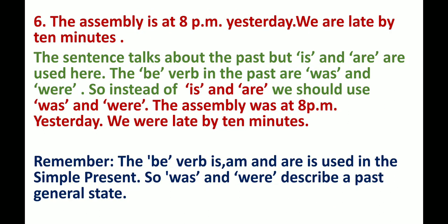Number 6: The assembly is at 8pm yesterday. We are late by 10 minutes. The sentence talks about the past, but 'is' and 'are' are used here. The b-verbs in the past are 'was' and 'were'. So instead of 'is' and 'are', we should use 'was' and 'were': The assembly was at 8pm yesterday. We were late by 10 minutes.